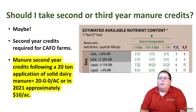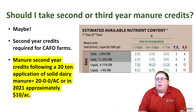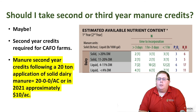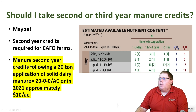So should I take second or third year manure credits? Maybe. Second year credits are required for certified farms — an example is a second year credit following a 20-ton application of solid dairy manure, which is a 20-0-0 fertilizer value. In 2021, that's worth approximately $10 per acre, so there's an incentive to use those second year credits, especially under challenging economic conditions. The earlier chart also provides this data with second year credits indicated.